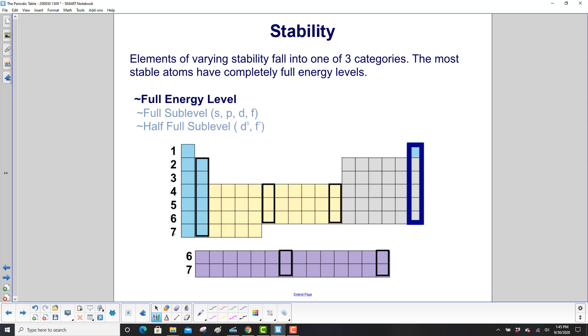Elements of varying stability fall into one of three categories. The most stable atoms have completely full energy levels. That's the last group on the periodic table, or the noble gases.